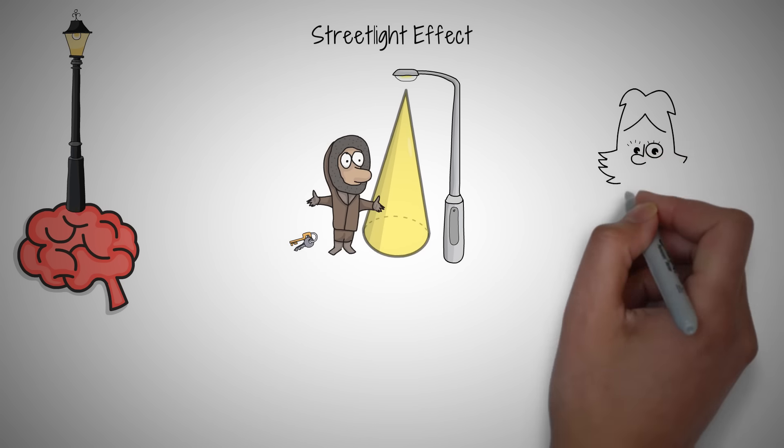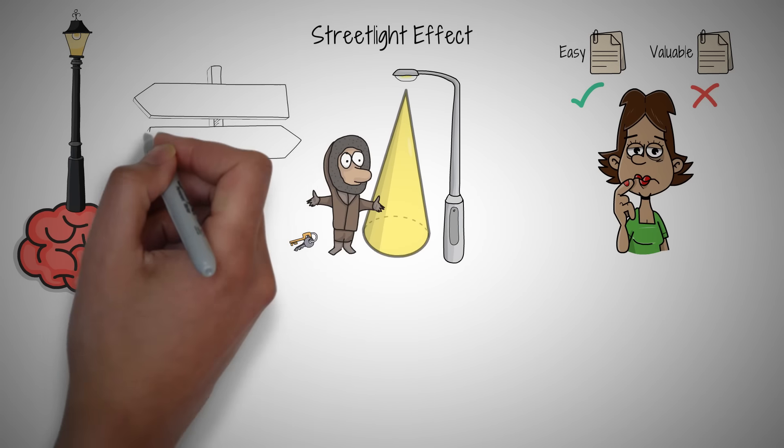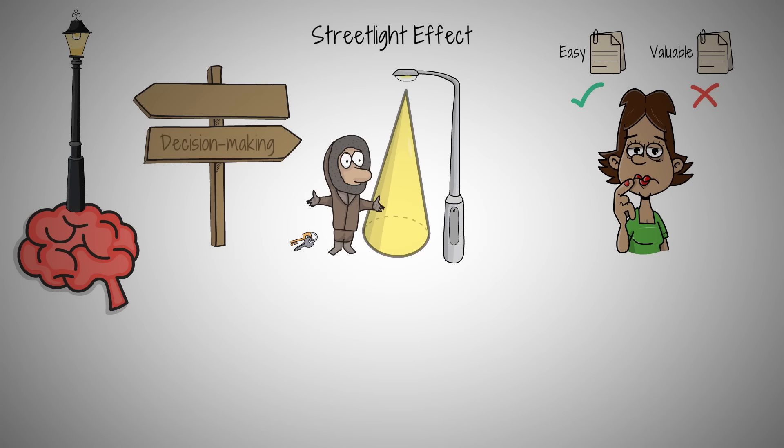This funny anecdote highlights our tendency to search for solutions where it's easiest, rather than where the answer truly lies. The streetlight effect is a cognitive bias that causes people to only consider the information that's easiest to find, often overlooking valuable data that requires more effort to obtain. This bias can limit our problem-solving abilities and decision-making processes, leading us down a path of least resistance, rather than effective resolution.